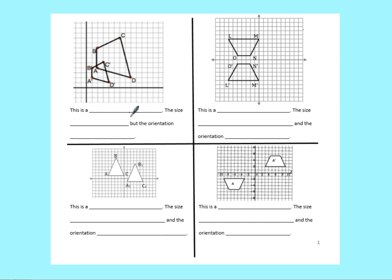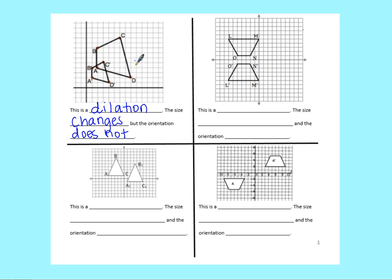Moving down the page, we have some examples of each transformation. In the first one, we start with shape ABCD and end with A'B'C'D'. The shape becomes the same shape but a different size — so that's a dilation. The size changes but the orientation does not. Notice side CD is still facing the same way as C'D'; both are still on the right side of the shape, so it's not being turned, just changing size.